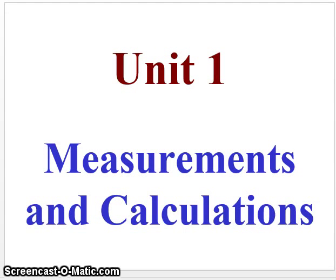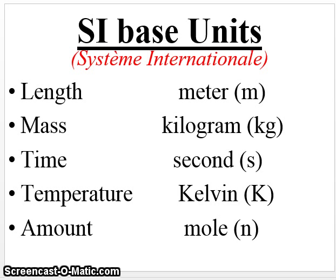This will be video 1.1 for chemistry. In this unit we'll talk about measurements and calculations, and we'll show you the units that we use across the board in chemistry in order to investigate chemicals and so forth. The first slide has the base units, called SI base units. SI means international system of units, which means scientists all over the world will use these units.